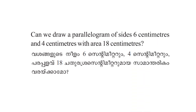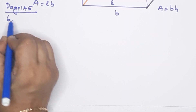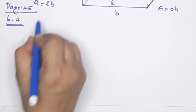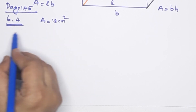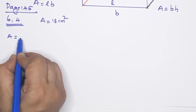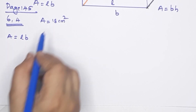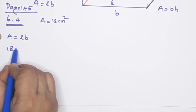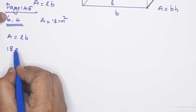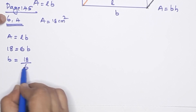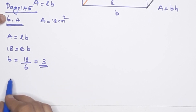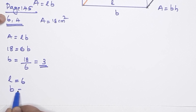Page number 145. Can we draw a parallelogram of side 6 cm and 4 cm with area 18 cm²? We have to show that 6 cm and 4 cm give a parallelogram with area 18 cm². The area of this rectangle: length into breadth. I am going to construct a rectangle. This is 18 cm. This is 4 cm. I am going to draw 6 cm. The breadth is equal to 18 by 6, that is 3 cm. The length is equal to 6 cm, the breadth is 3 cm.